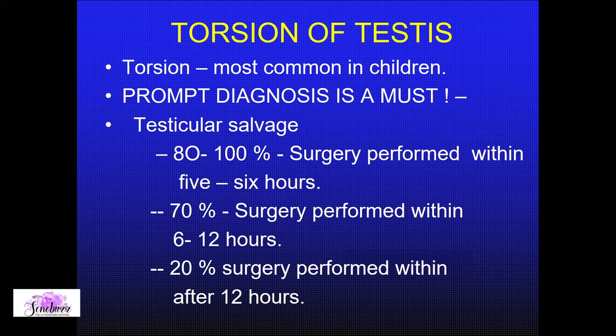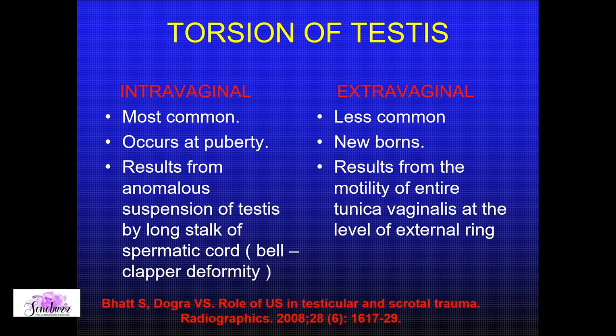Why do we stress picking up torsion so early? This chart clearly shows that if you pick up testicular torsions in the first five or six hours, and operate to untwist, you can achieve an 80–100% salvage rate. But as time passes, you will lose the testis most of the time. It is therefore very critical to make this diagnosis as promptly as possible.